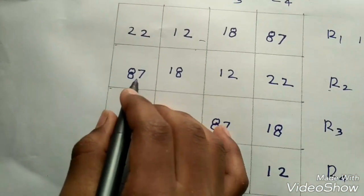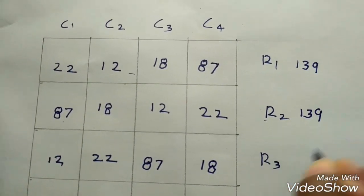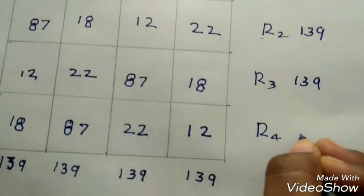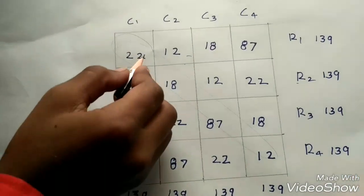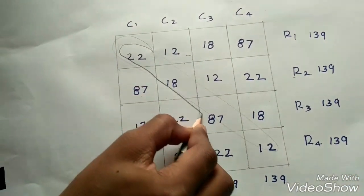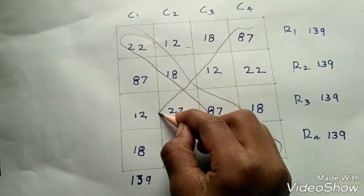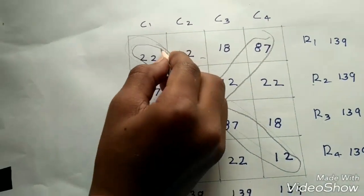2nd row is 139. 1st row 139. 3rd row is 139. 4th row is 139. 2nd row is 139. Add diagonal 4 numbers is equal to 139. 3rd row is 139.